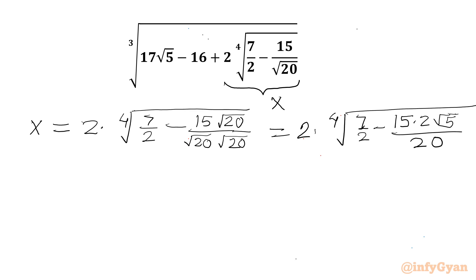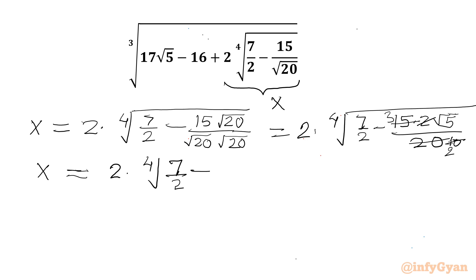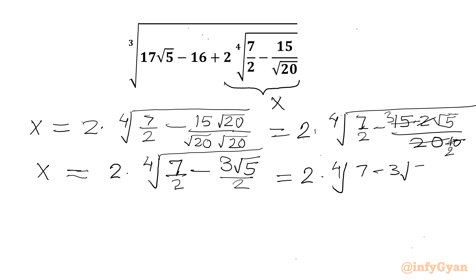Now I can cancel terms — the denominator is common. So I can write x is equal to 2 times the 4th root of 7 over 2, minus 3√5 over 2. This gives us 2 times 4th root of 7 minus 3√5, divided by 2.